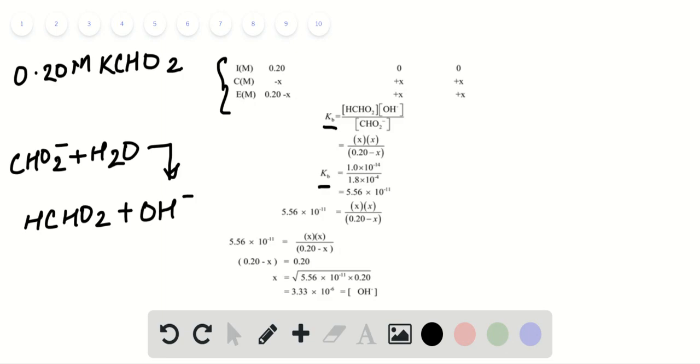Substituting values from the ICE table, the value of X turns out to be 3.33 × 10^-6, which is the concentration of OH negative ions.